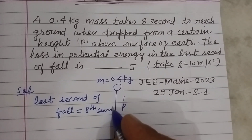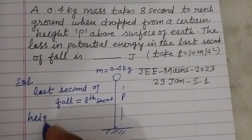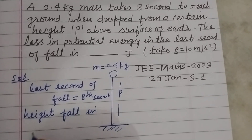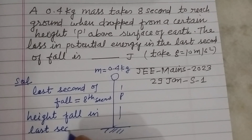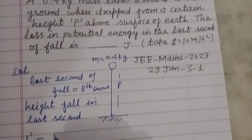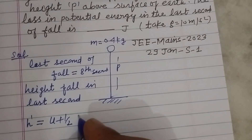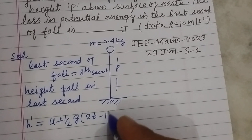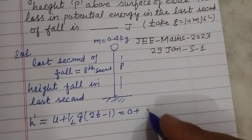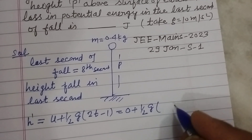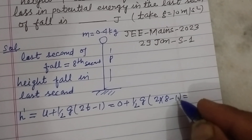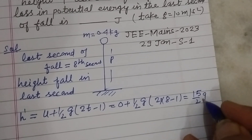So height fallen in the last second: h is equal to u plus half g times (2t minus 1) — the distance covered in that particular second. With t equal to 8, this gives half g times (2 times 8 minus 1), which is half g times 15, so h equals 15g over 2.